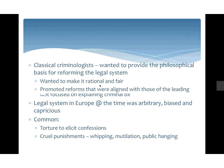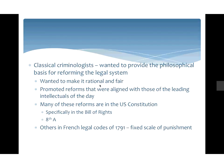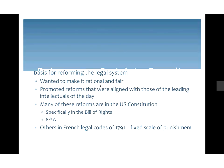Classical Criminologists wanted to provide a philosophical basis for reforming the system, and their goal was to make it rational and fair. They promoted reforms aligned with the leading intellectuals of the day, many of which were adopted into the U.S. Constitution — more specifically in the Bill of Rights. The Eighth Amendment deals with cruel and unusual punishments, and other amendments deal with due process and trial rights. The French legal code of 1791 used a fixed scale of punishment drawing on these writings as well.